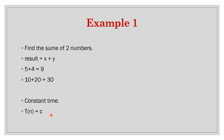Later we will also see a shorthand for representing this. We will use Big O notation, where constant time is written as O(1), and linearly related time is written as O(n). We will cover this in our next lesson or the one after. For now, this constant time example, T(n) = c, is our first case.